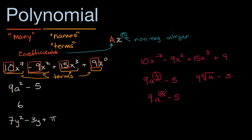So all of these are examples of polynomials. There are a few more pieces of terminology that are valuable to know. Polynomial is a general term for one of these expressions that has multiple terms — a finite number, not an infinite number — and each of the terms has this form. But there are more specific terms for when you have only one term, two terms, or three terms. When you have one term, it's called a monomial. So the number six is an example of a monomial, which we could write as 6x to the zero. Another example of a monomial might be 10z to the 15th power.